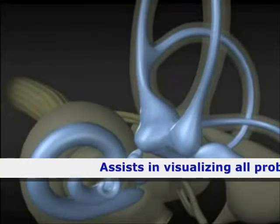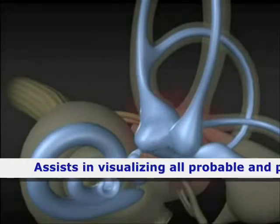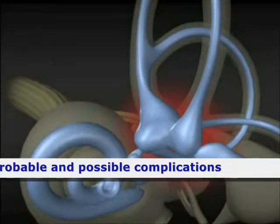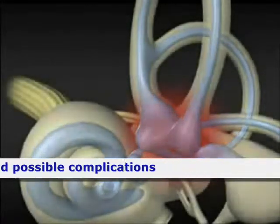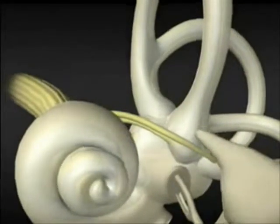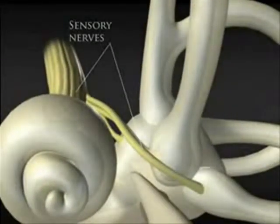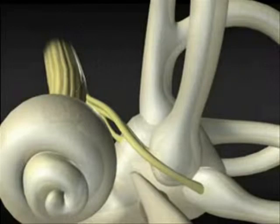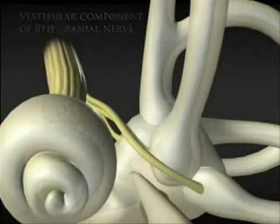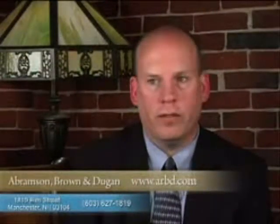The fracture itself can also result in physical irritation causing inflammation of the receptors within the inner ear, or the sensory nerves that combine to create the vestibular component of the eighth cranial nerve. This nerve sends signals to regions of the brain associated with balance.